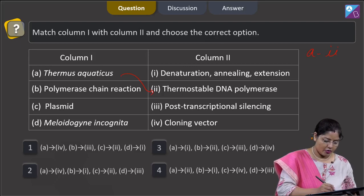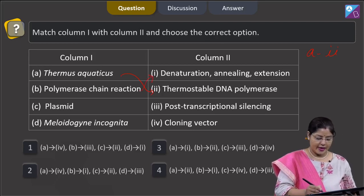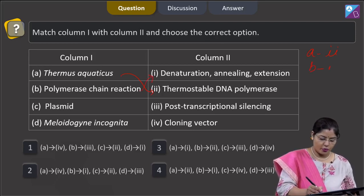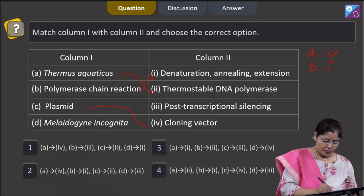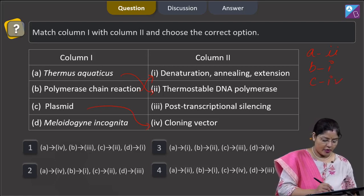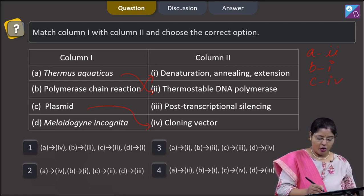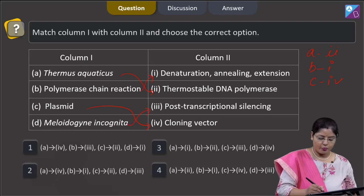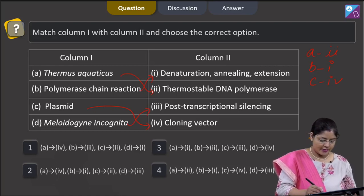PCR involves denaturation, annealing, and extension, so B matches with 1. Plasmid—plasmid can be used as a cloning vector, so C matches with the 4th.